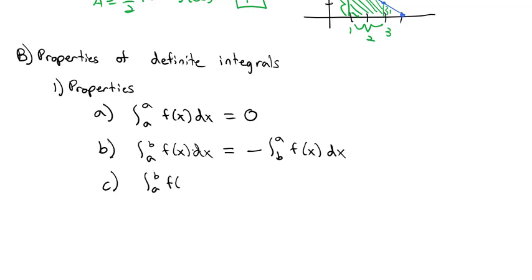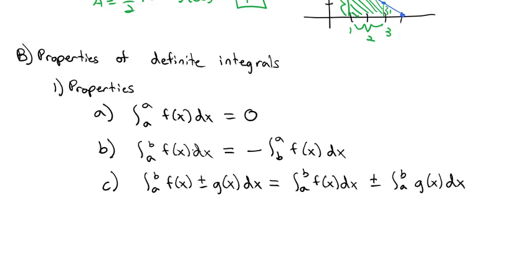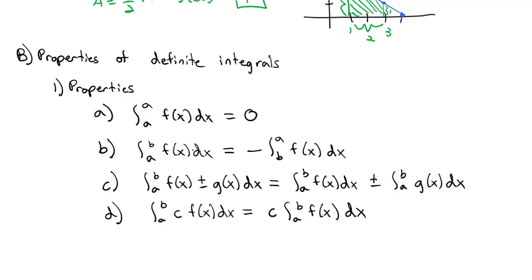Third property: the integral from A to B of f(x) ± g(x) dx can be split — just like sigma notation through addition and subtraction — into the integral of f(x) dx plus or minus the integral of g(x) dx. Fourth property: a constant multiplying a function can be pulled out in front of the integral.